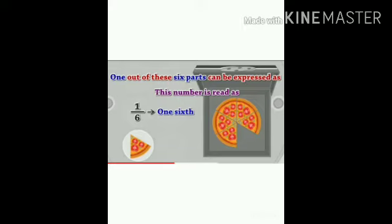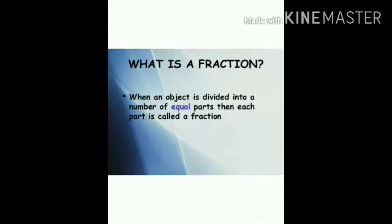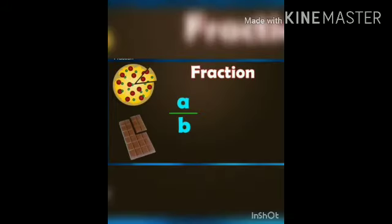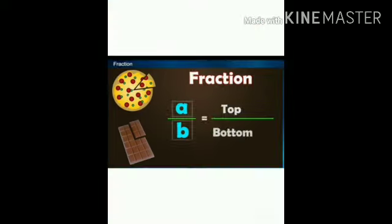We can say that each one of you had one-sixth of the pizza. Numbers in this form are known as fractions. What is a fraction? Fraction is an object divided into equal parts, or we can say that fraction is a part of a whole. In this picture we can see that a fraction has two parts: a upon b.